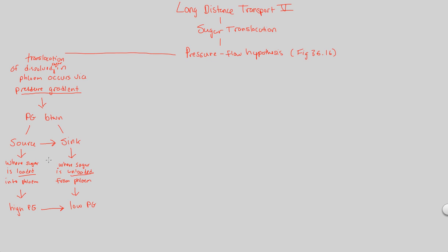Now that we have the big general idea in place, let's look at the actual mechanism — how the pressure flow hypothesis occurs within plants that use this approach to translocate sugars. There are two sides to look at: how the mechanism happens at the source and how it happens at the sink. Focusing first on the source, I like to break this into two events. First, we look at events occurring within the leaf, because the leaf is a great example of a source.